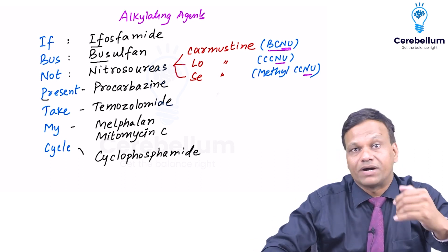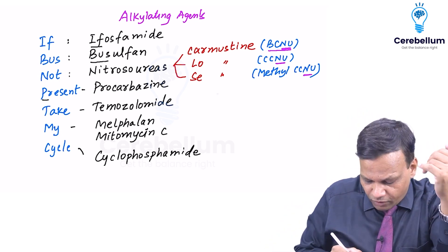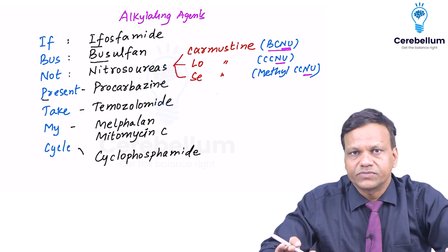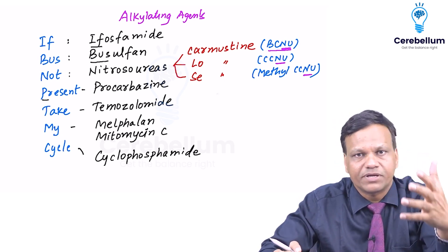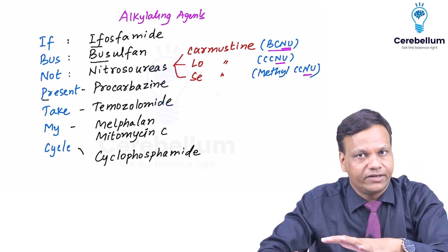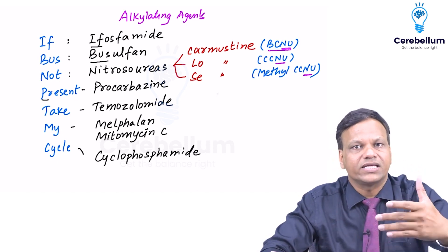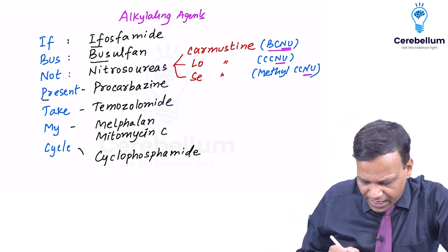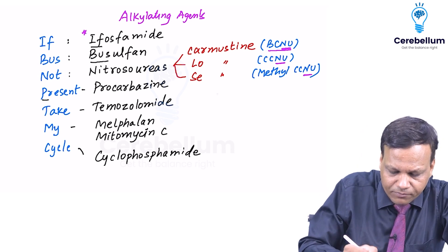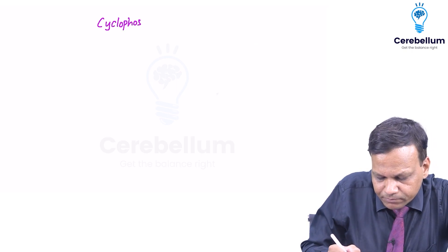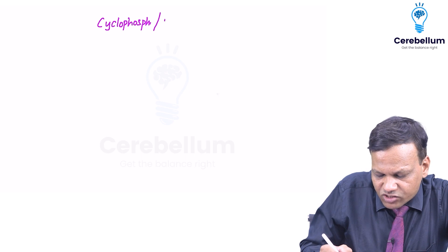To recap the mnemonic: 'If bus not present, take my cycle.' All these drugs have six side effects — four common to every anti-cancer drug (bone marrow suppression, alopecia, diarrhea, hyperuricemia) and two specific to this group (secondary leukemia and infertility). Now for special points regarding individual drugs: the first and last drugs — Ifosfamide and Cyclophosphamide.